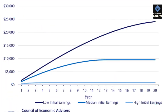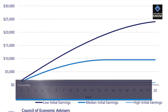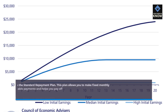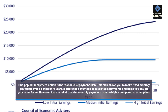One popular repayment option is the standard repayment plan. This plan allows you to make fixed monthly payments over a period of 10 years. It offers the advantage of predictable payments and helps you pay off your loans faster. However, keep in mind that the monthly payments may be higher compared to other plans.